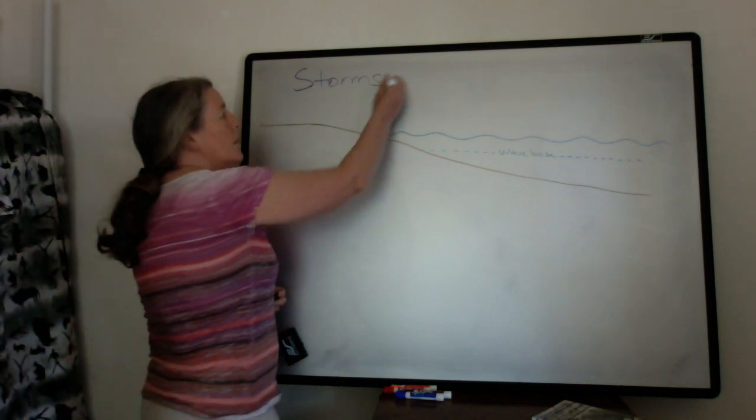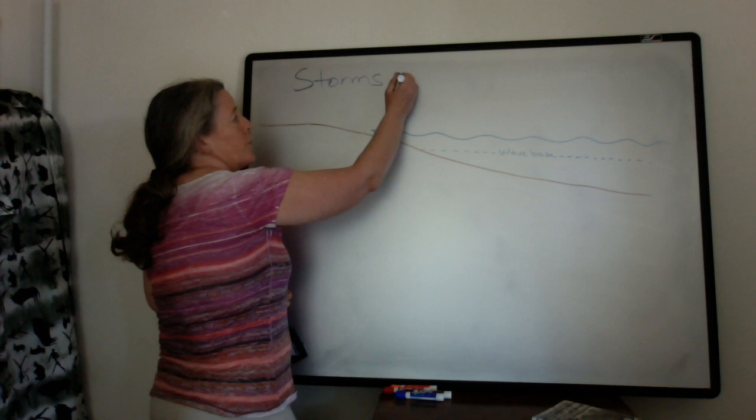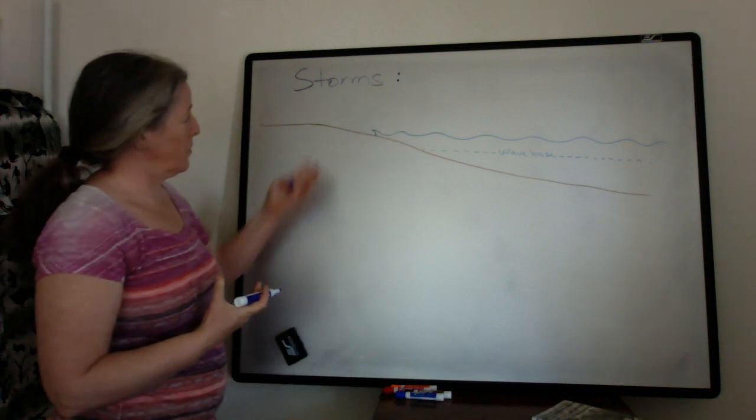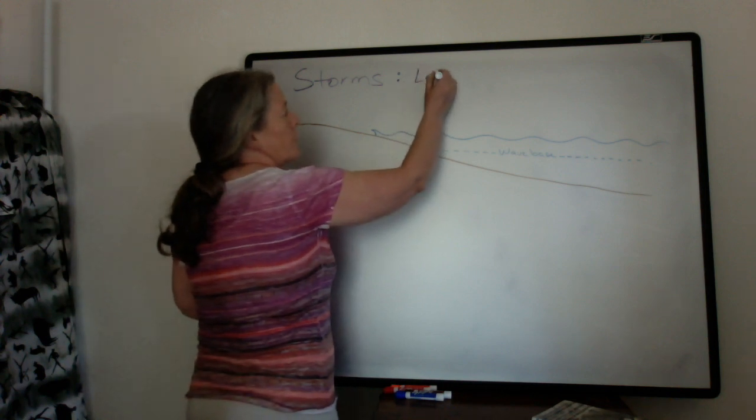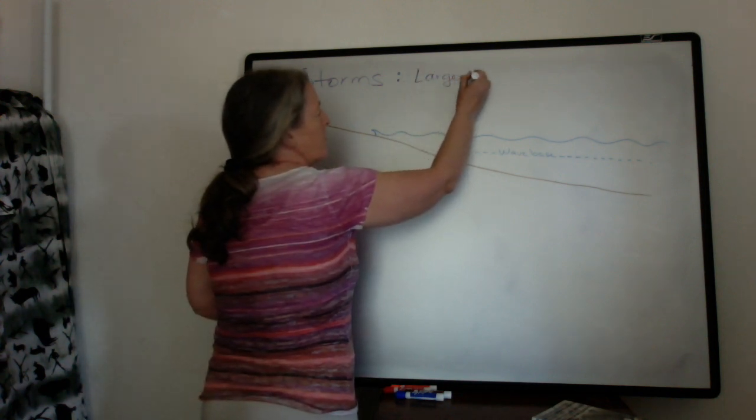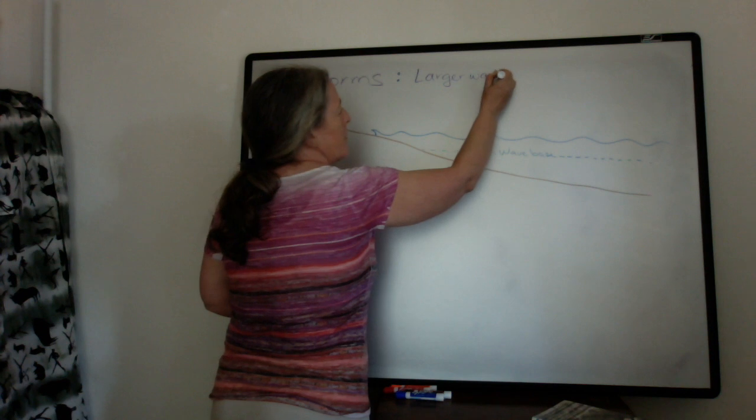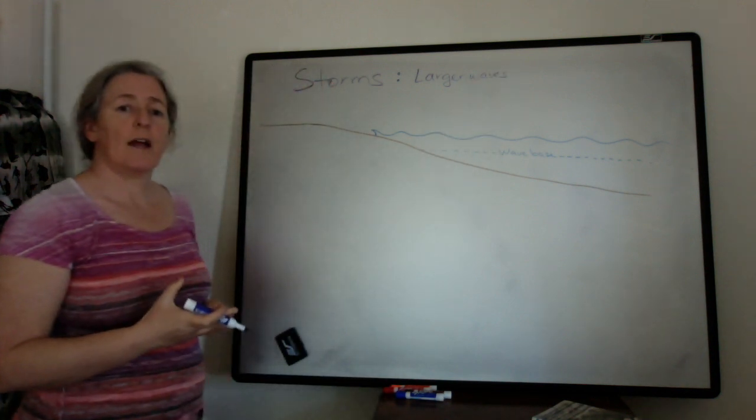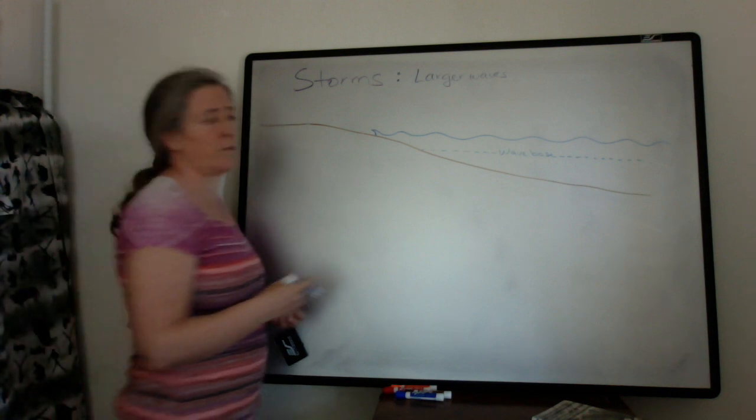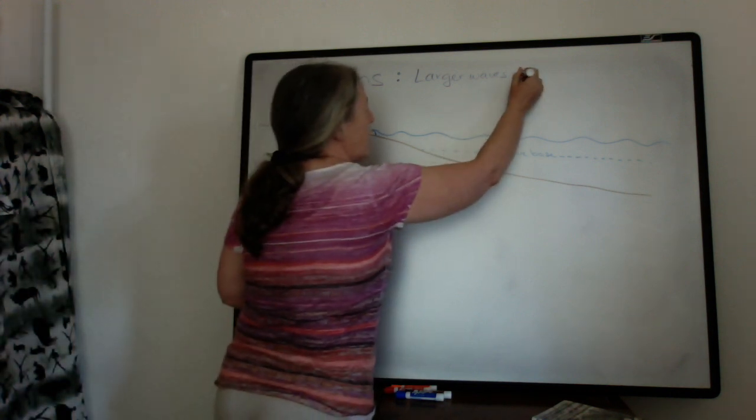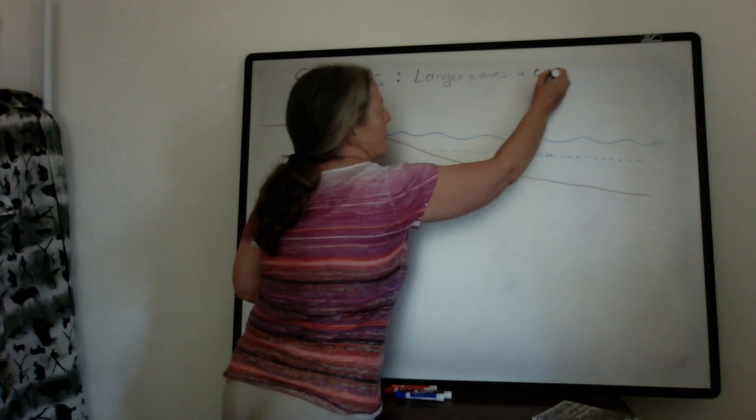With storms, you tend to have very large winds that increase the size of the waves, so you often have larger than normal waves. The storm can drive water onto the coast and pull it back off. In other words, they can create a storm surge, and that storm surge creates currents.